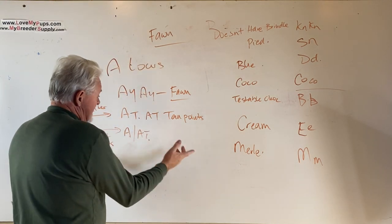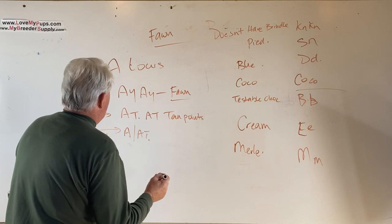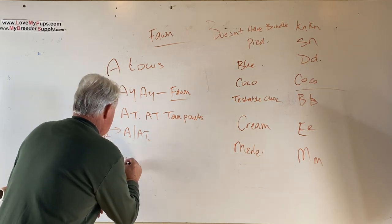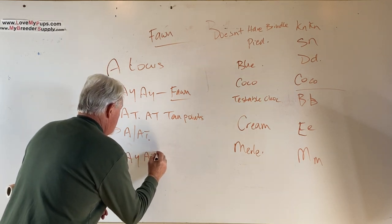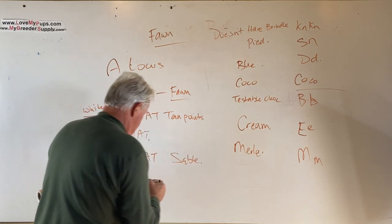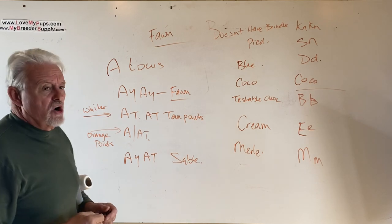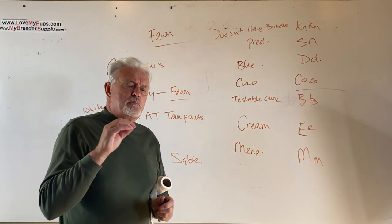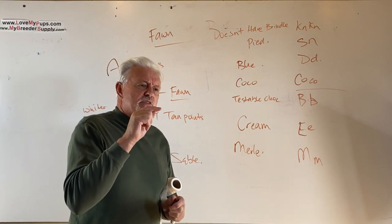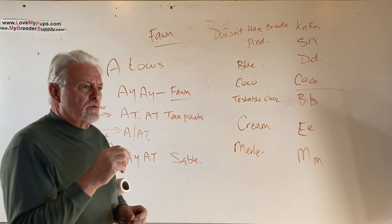So there's two different ways to get tan points: AtAt or AtA. They produce tan points. A dog that is AyAt will be a sable. This is a dog that rather than being a straight fawn dog is a dog that has kind of tips of its hairs are black, and it makes for what we call sable.